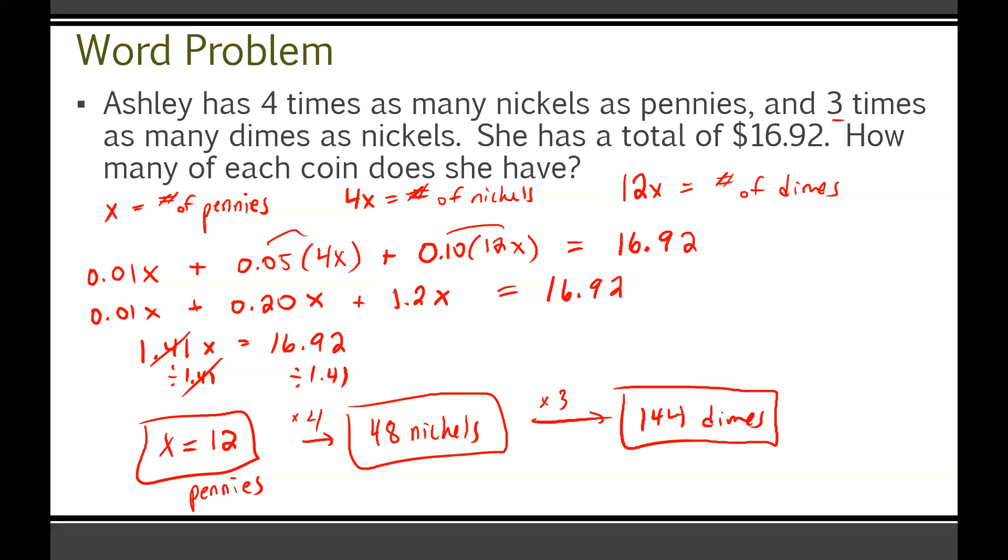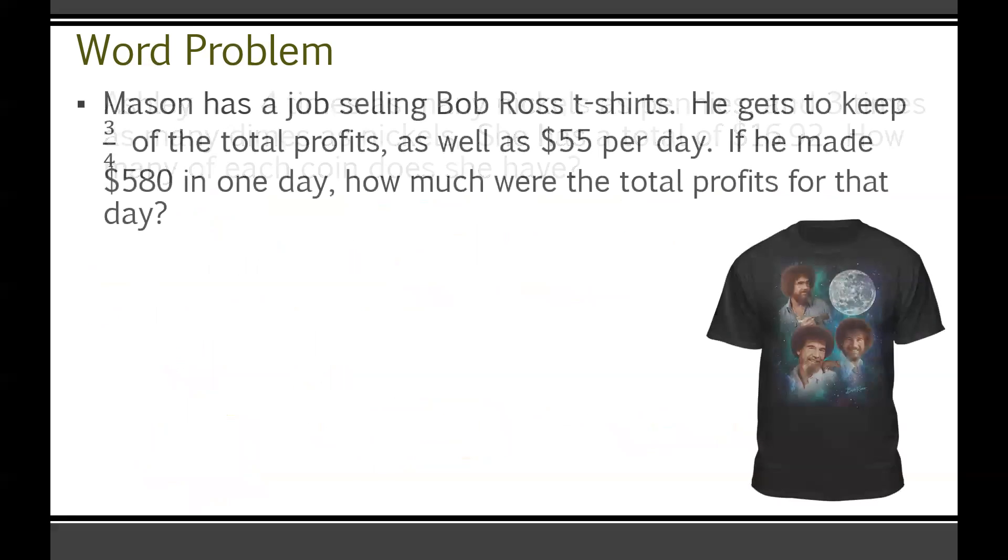So just again, I times that by 4. And then we have 3 times as many dimes as nickels, so we now need to times 48 by 3 to get our number of dimes, and our number of dimes are going to be 144 dimes. There we are. You could have also just done 12 times your number of pennies. 12 times 12 is also 144. However you did it, it doesn't really matter. It's all the same thing one way or another. And if you're ever not sure, you could always check this by saying, okay, what would 12 pennies plus 48 nickels plus 144 dimes add it all together? Would that equal $16.92? Take my word for it, it totally will.